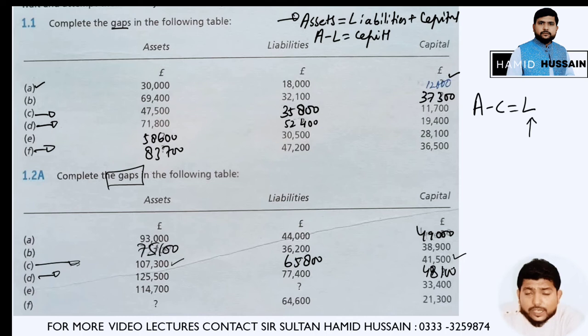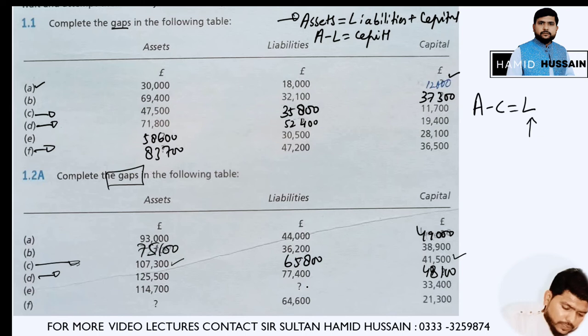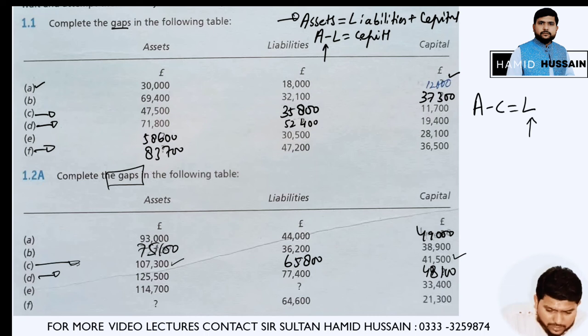In part E, assets are 1,14,700 and capital is 33,400. You need to find out liabilities, so you apply the formula: assets minus capital equals liabilities. So 1,14,700 minus 33,400 gives 81,300.